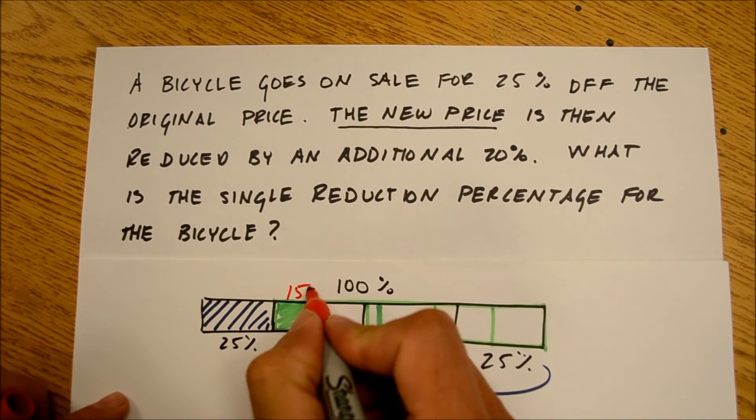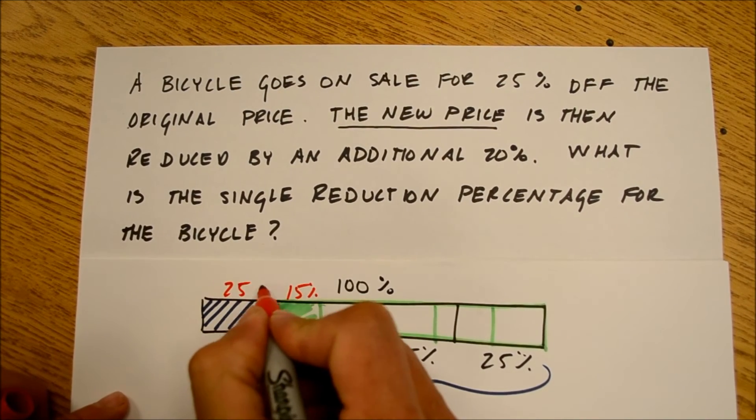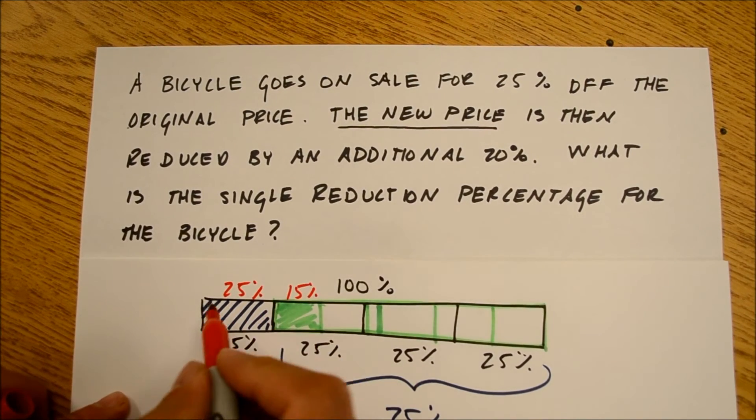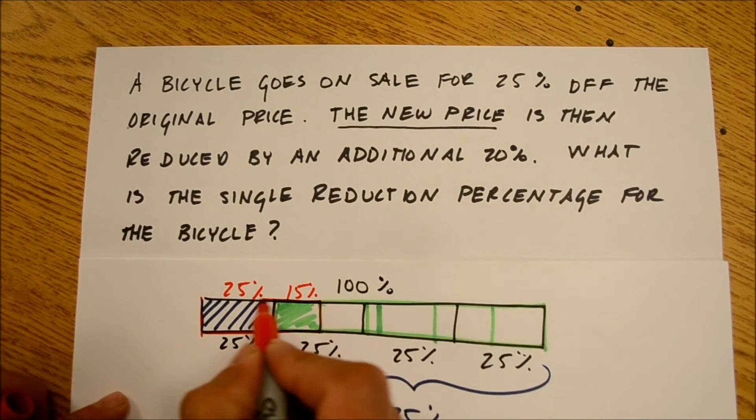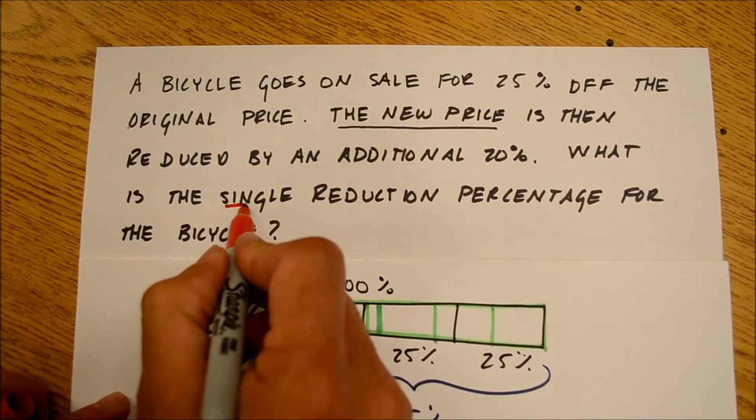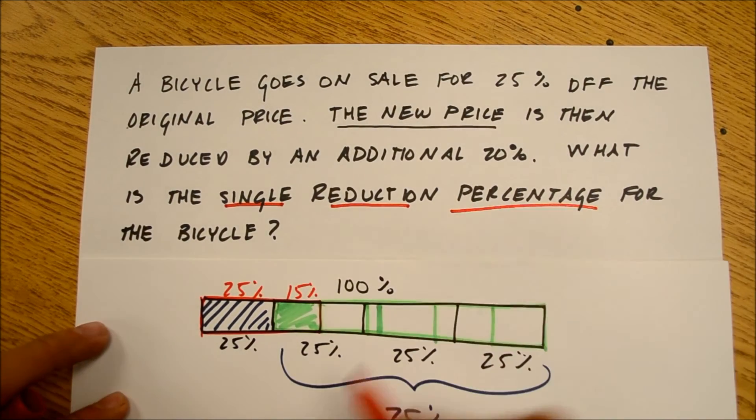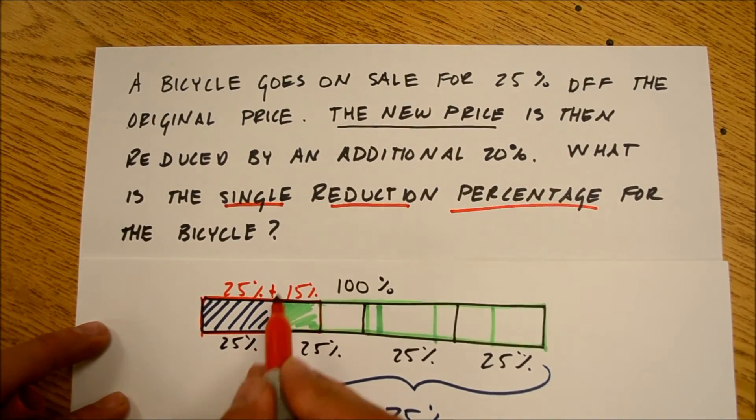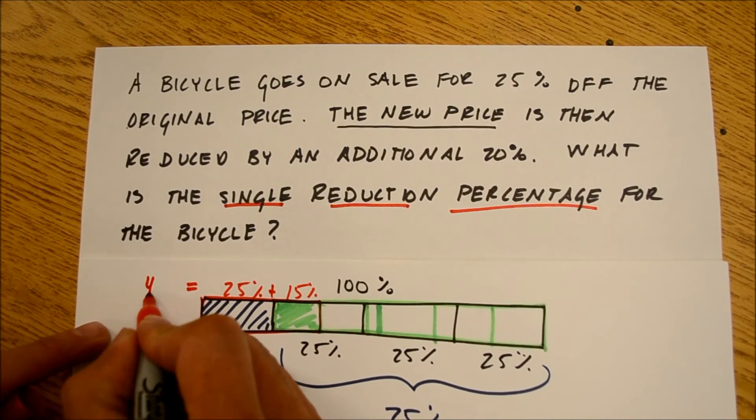I have here 15% and 25%. I've taken both of these out of the original price. So, my single reduction percentage is 15 plus 25, which is 40%.